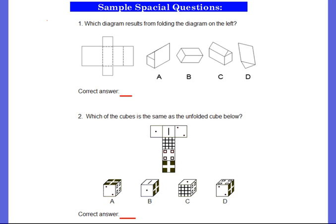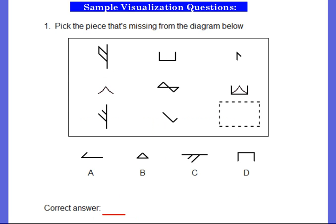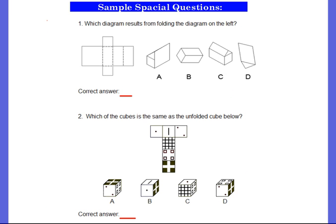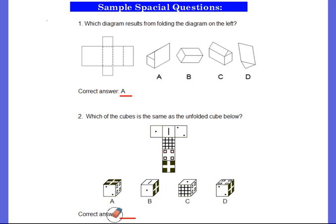Now we have spatial questions. For number one, in the picture on the left, if you folded along those dotted lines, what shape would you end up with — A, B, C, or D? If you'd like more time, go ahead and pause the video. The answer is A. Did you get that right? For number two, which of the cubes is the same as the unfolded cube shown? If you'd like more time, go ahead and pause the video. The answer is A. How'd you do?